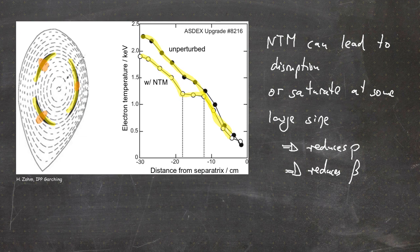That's it for this video, where we talked about the internal kink instability. You learned about the sawtooth instability, about tearing modes, and in some detail about the neoclassical tearing mode — an important instability which can however be controlled or mitigated by localized current drive by microwaves. Hope to see you in the next video.